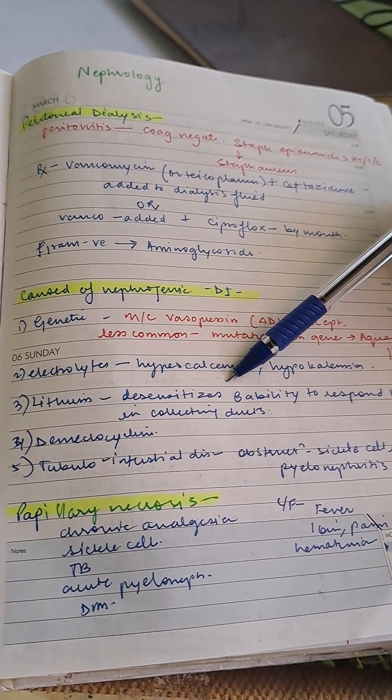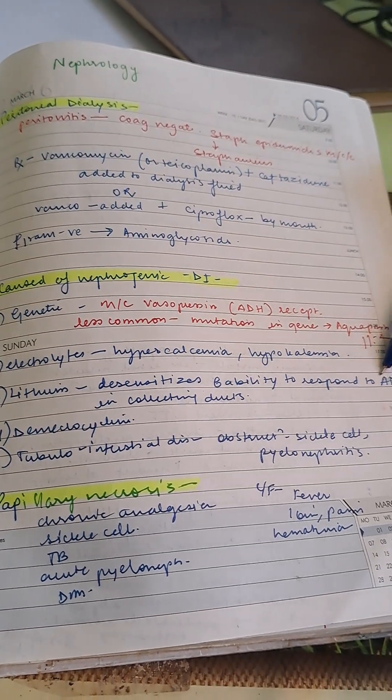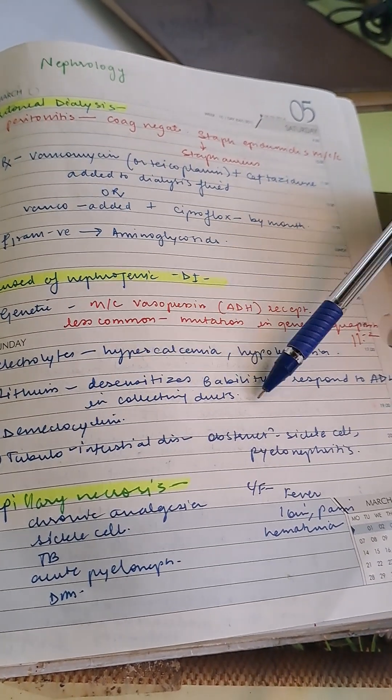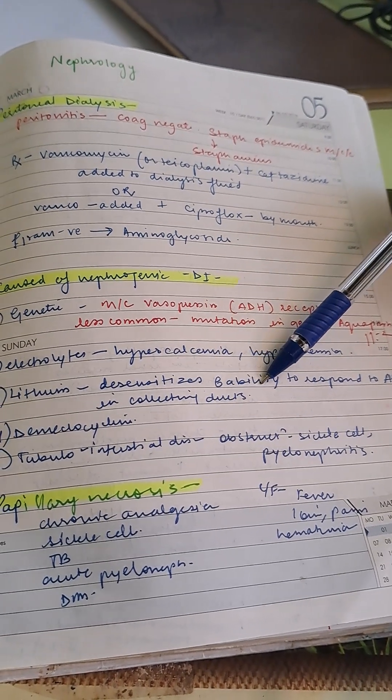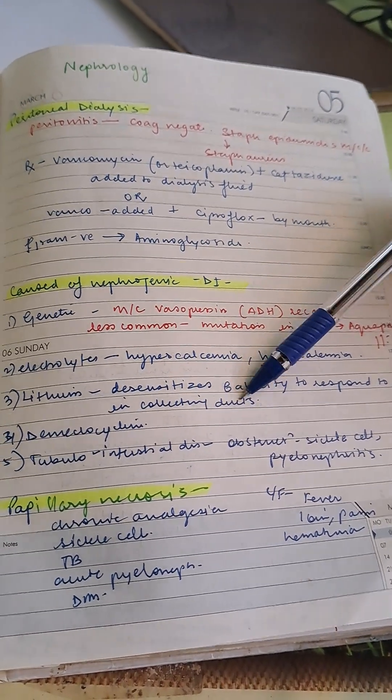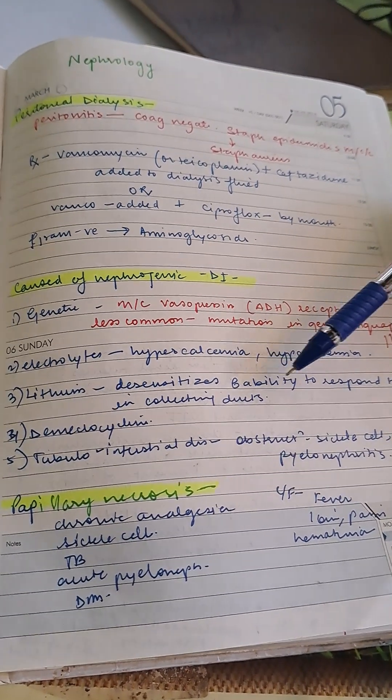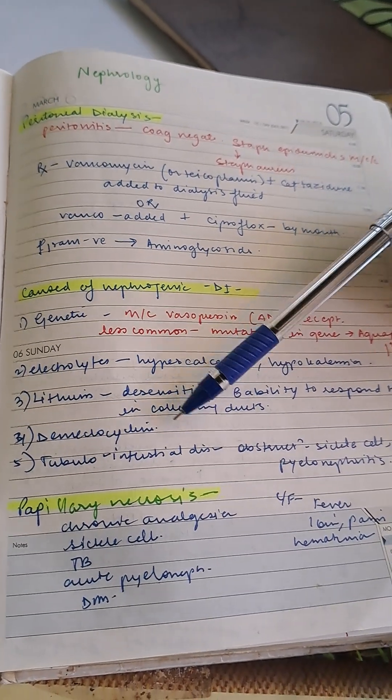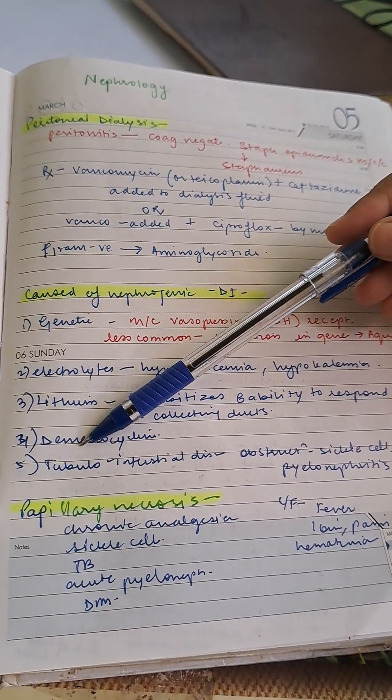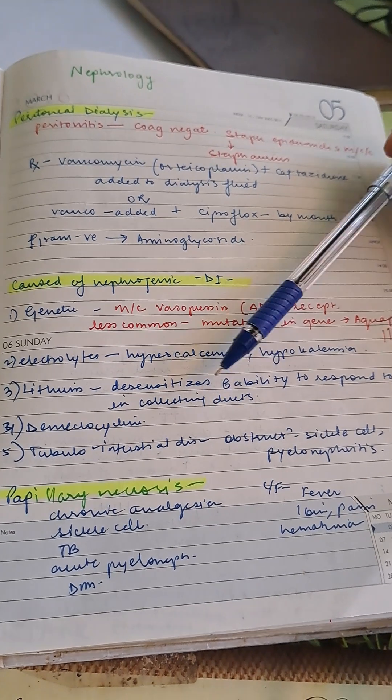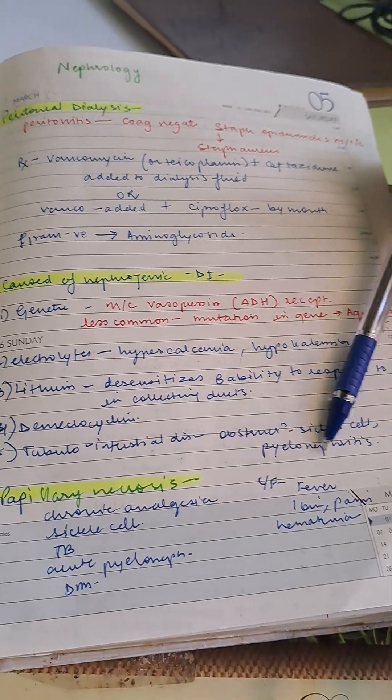Lithium desensitizes the kidney's ability to respond to ADH in the collecting duct—this is a frequently asked MCQ in past medicine. Demeclocycline is another drug that can cause it. Tubular interstitial diseases, obstruction, sickle cell, and pyelonephritis can also cause nephrogenic diabetes insipidus.